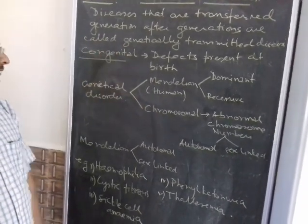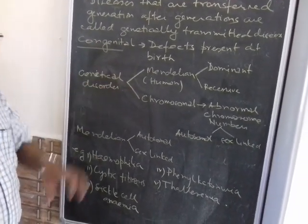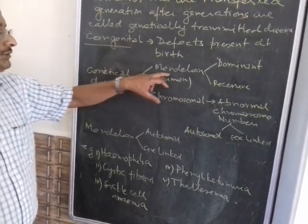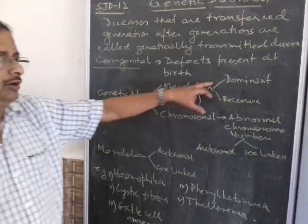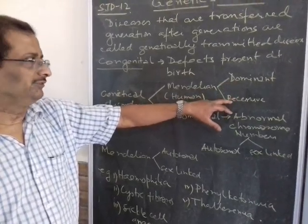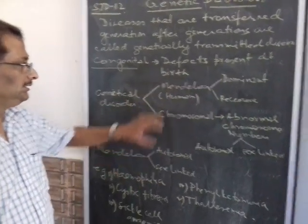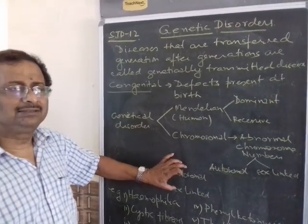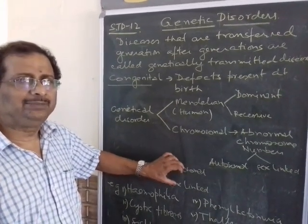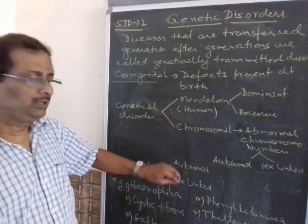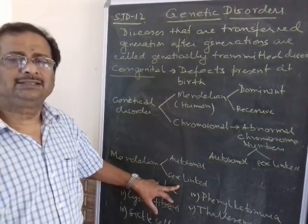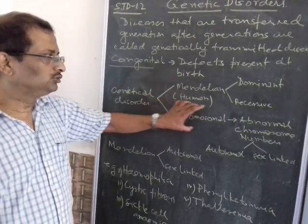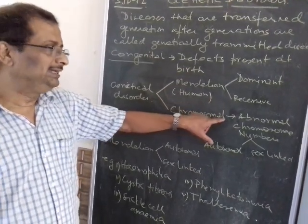The Mendelian disorders may be dominant or recessive. They can also be autosomal — meaning the disorders are on genes present on the autosomes — or they can be sex-linked disorders. Chromosomal disorders are mainly due to abnormal chromosomal numbers.